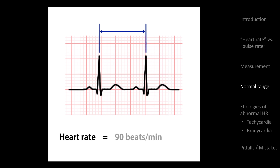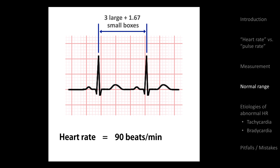But a rate of 90 results in a physical interval of 3 large boxes plus 1 and two-thirds small boxes. Even with a magnifying glass and ruler, determining whether or not the distance between QRS complexes exceeds that length is challenging. So picking 60 to 100 back in the 1940s was based on the pre-existing and completely arbitrary decision as to the speed with which ECGs were printed and the size of the grid paper on which that printing was done. That arbitrary decision led to the most pervasive myth in the history of medicine.